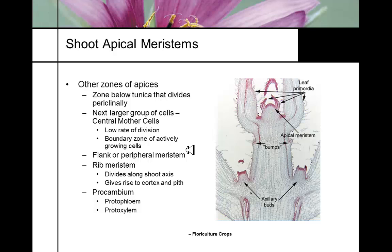Typically there are groups of central mother cells with a low rate of division in a boundary area. The procambium — made up of protophloem and protoxylem — represents the early stages of development of our vascular tissue. For this reason, carnation and African violet growers can harvest the meristematic region of the cells to grow new plants, and since it's not physically connected to the vascular tissue, vascular wilts and Verticillium diseases cannot be translocated to that area.